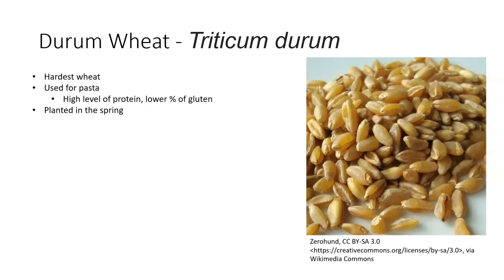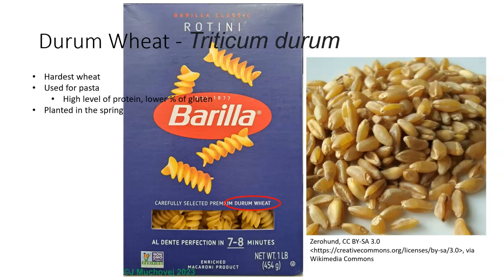Notice the difference between gluten content based on the type of wheat — gluten being a protein can trigger allergic reactions. Durham wheat has the highest gluten content and is used for pasta. Durham wheat is best for pasta, couscous, and Mediterranean breads. Durham wheat is planted in the spring.